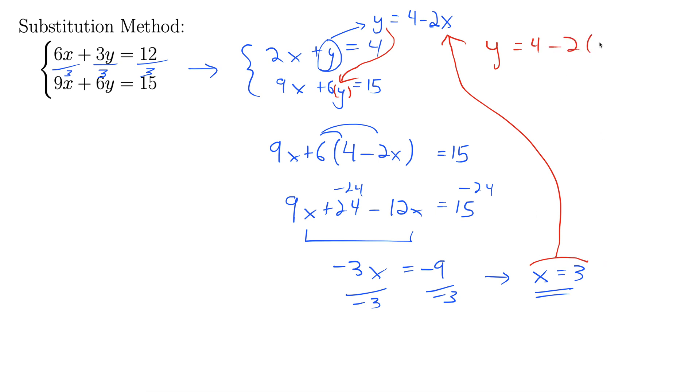So that gives us y equals 4 minus 2 times 3, we decided x was 3. So y equals 4 minus 6, which is negative 2.